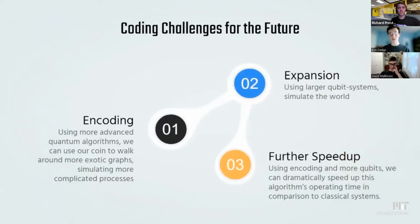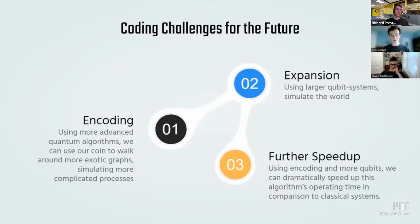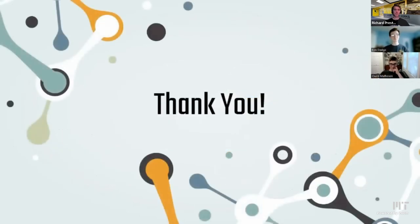There are a couple of future directions we'd like to pursue. The first is encoding — we'd like to create more complicated graphs and more unique ways to move around them to simulate more complex tasks. Next, we'd like to expand our systems, as we were only able to run them on very limited systems with few qubits. With more qubits, we can simulate more interrelated tasks. Finally, speed up: by applying certain algorithms and manipulations on qubits, we can make our quantum walk far faster than any classical walk, allowing us to simulate large systems that classical systems currently can't. Thank you to all of BeaverWorks' staff, instructors, and TAs for giving us the knowledge we needed. We hope this inspires you to view quantum computing as an exciting field. Thank you.